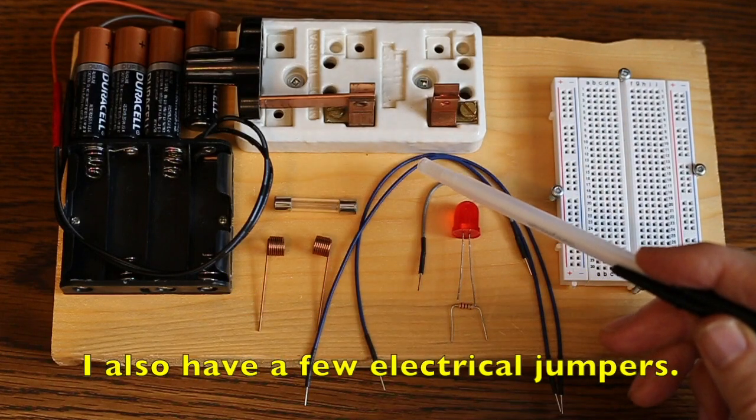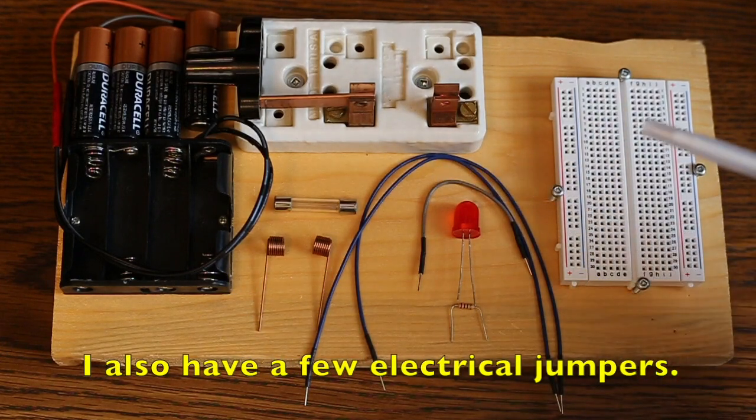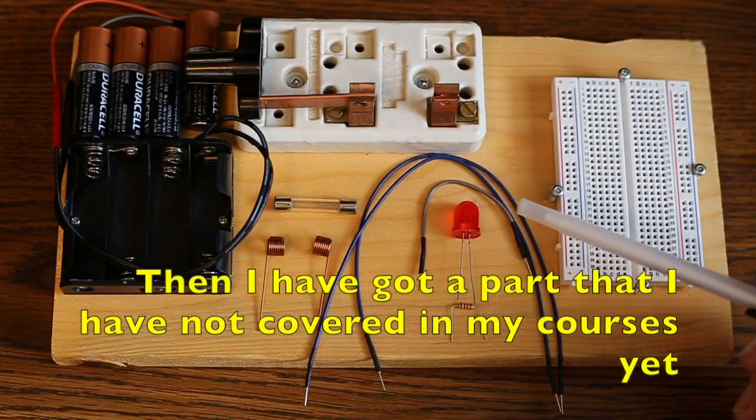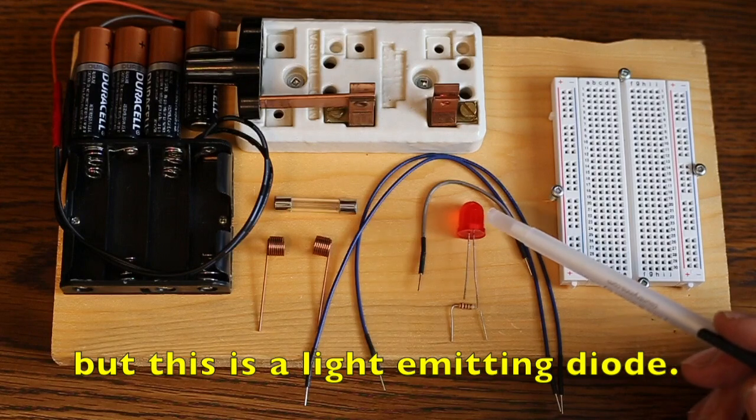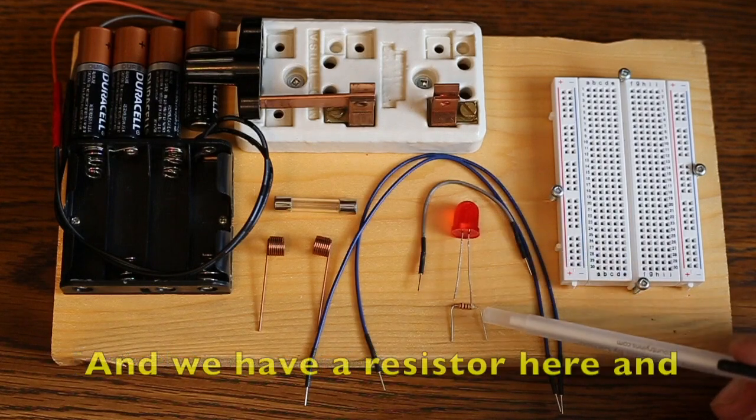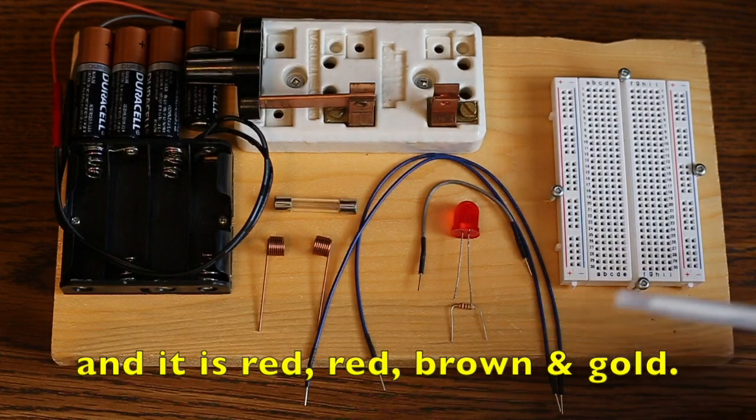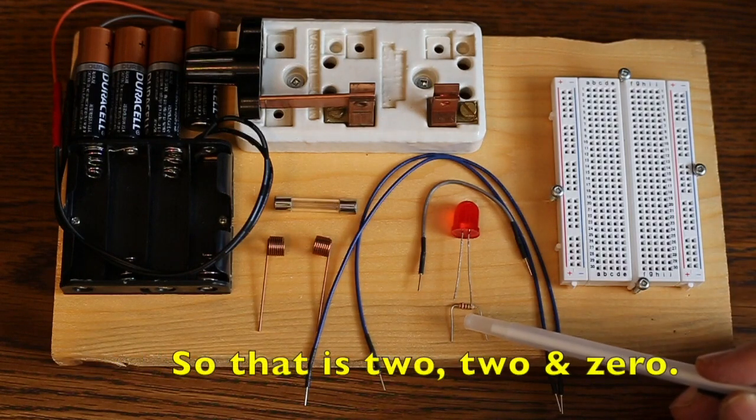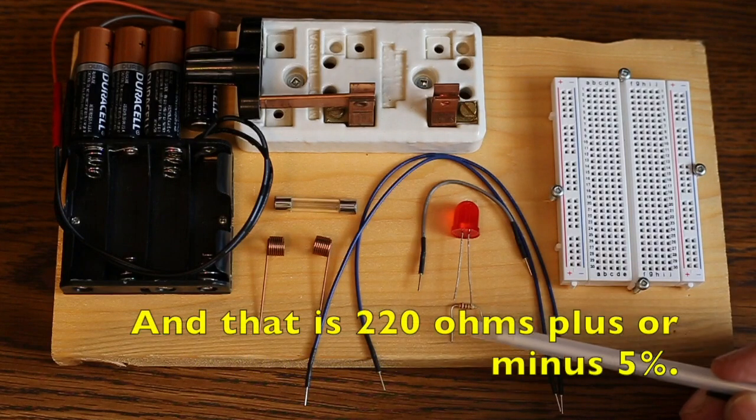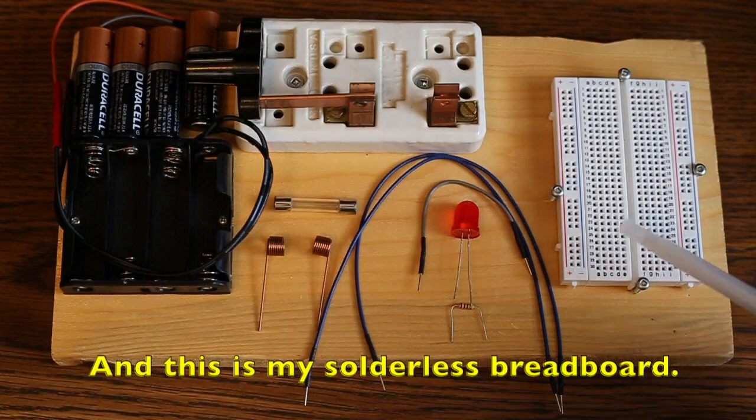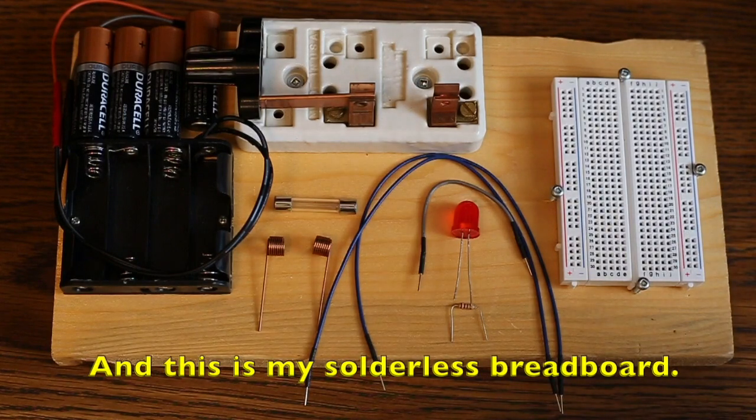I also have a few electrical jumpers, and then I've got a part that I haven't covered in my courses yet, but this is a light emitting diode. And we have a resistor here, and it's red, red, brown, gold. So that is 220 ohms plus or minus 5%. And this is my solderless breadboard.